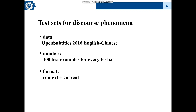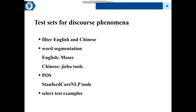Next, we will show how to make test sets for specific discourse phenomena. We select the Open Subtitles 2016 English-to-Chinese corpus as our data. There are 400 test examples in our test set for discourse phenomena, and the format of each test example is one preceding sentence as context and the current sentence. To select our test examples, we first filter English and Chinese characters from the original data, then utilize NLP tools to segment words — MOSE for English word segmentation and other tools for Chinese. We use Stanford CoreNLP tools for part-of-speech tagging, and then select test examples based on the tagging results.